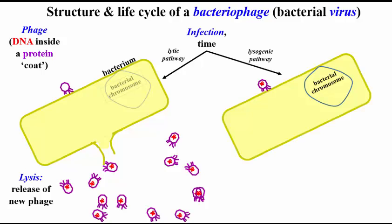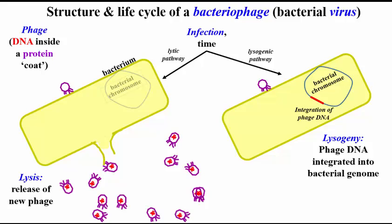Alternatively, after attaching to the bacterial cell, the phage can instead undergo lysogeny. In this case, after the DNA is in the infected cell, it approaches the bacterial chromosome. After it integrates into the bacterial genome, the phage DNA will replicate along with the bacterial chromosome — this is the lysogenic pathway. If adverse environmental conditions stress the bacterium, the integrated phage can excise from the chromosome and re-enter the lytic pathway, thus escaping a possibly painful fate of the bacterium.